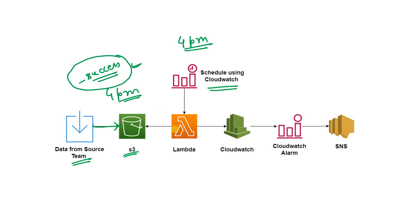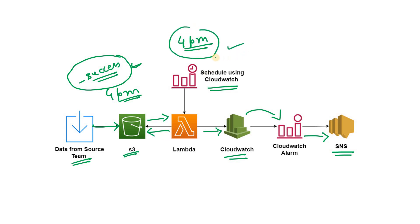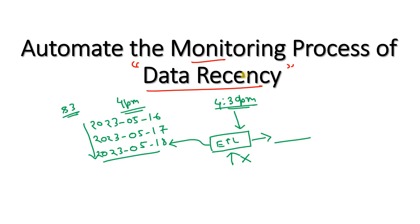If the success file is present, our downstream job will not be impacted — the source team sent the data on time. But if the success file is not available at 4 PM when Lambda scans the S3 latest partition, we should send a mail to the source team. In the simplest form, you can fail the Lambda code. As soon as Lambda fails it will be noted in CloudWatch metrics, from which you can trigger a CloudWatch alarm, and using that alarm you can notify the source team via AWS SNS — sending a mail that the file has not arrived. To summarize: Lambda checks S3 instead of S3 triggering Lambda, and we look for the success file to confirm complete data arrival.